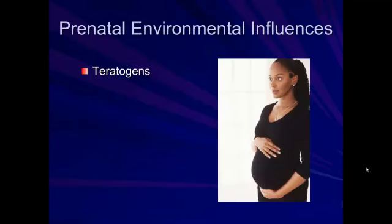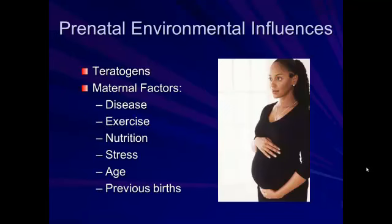The other contributing factor the mom provides is the environment — both outside of herself and what she consumes and puts into the womb. Teratogens are harmful chemicals that could negatively impact the development of the fetus — things like alcohol, tobacco, hard drugs, or even caffeine, with some research pointing to an increased likelihood of miscarriage if a woman consumes a lot of caffeine. Other factors include whether the mom has any particular diseases that could harm her developing baby. For example, if the mom is HIV positive, there's a likelihood of passing that on to the fetus, which is a major concern in parts of the world where many women are HIV positive. There are also concerns about things like keeping women from handling kitty litter, because cat feces can contain a parasite called toxoplasmosis that could cause problems.